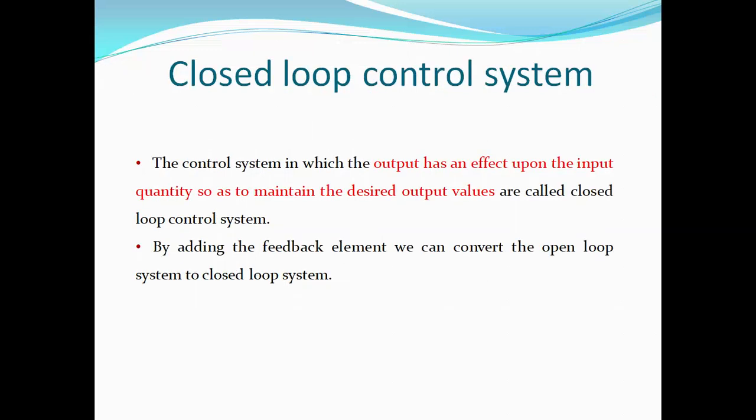What is a closed loop control system? The control system in which the output has an effect upon the input quantity so as to maintain the desired output values is called a closed loop control system. By adding the feedback path element, we can convert the open loop system to a closed loop system.